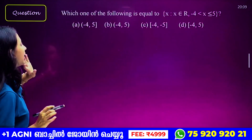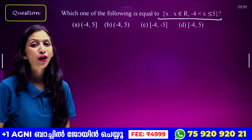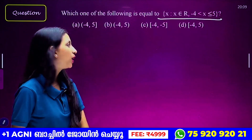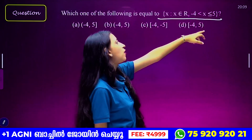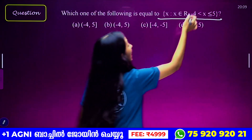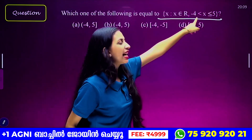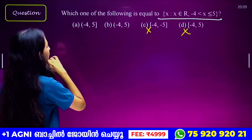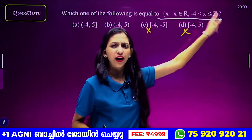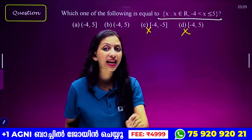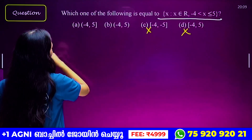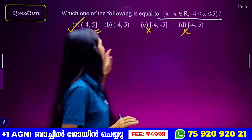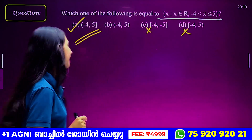We already have set-builder formula. Which one of the following is equal to: set of all x such that x belongs to R, minus 4 less than x less than or equal to 5? If we have less than, then we will open up at minus 4. Then we will add less than or equal to 5 — less than or equal to 5 means we include 5. That is a closed interval. Then we have option A: minus 4, 5. That is the correct answer.